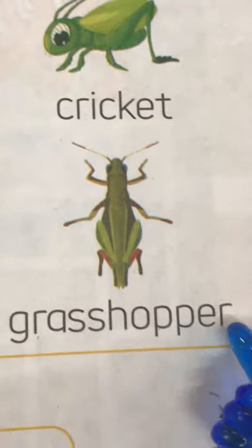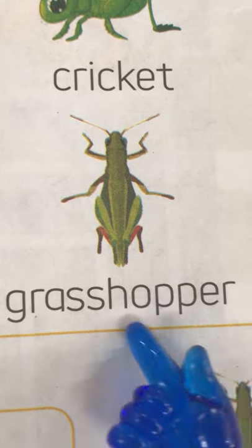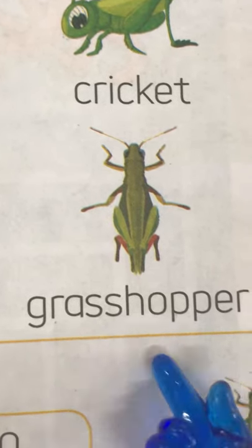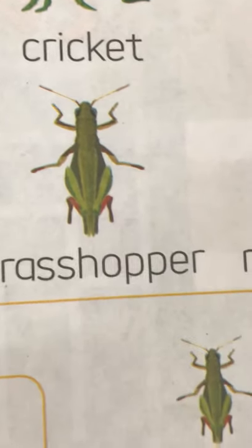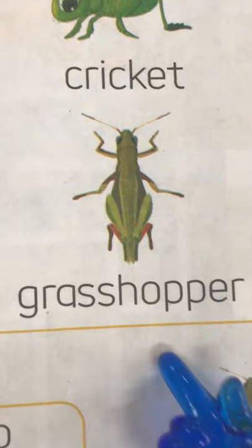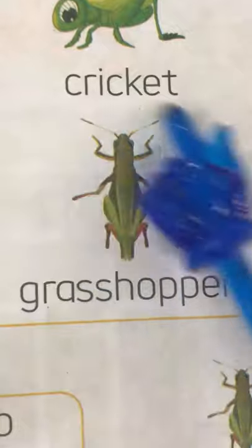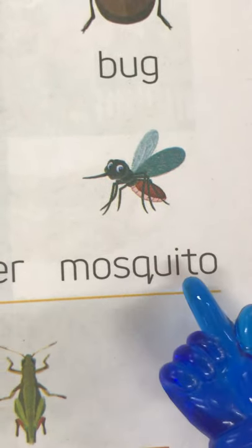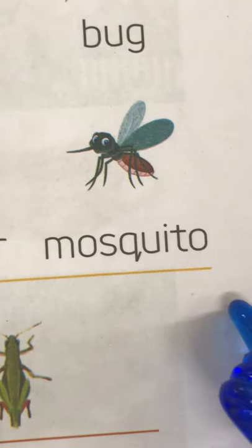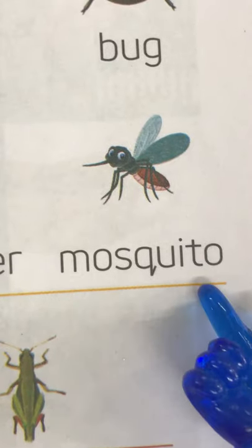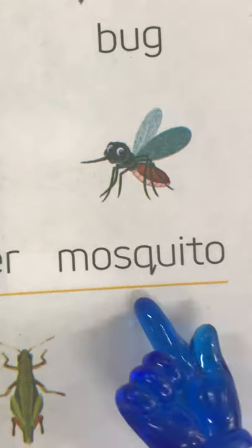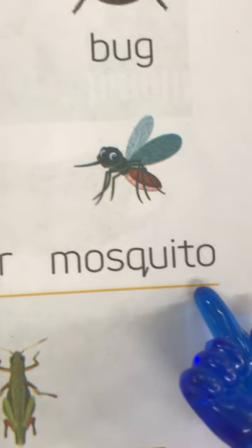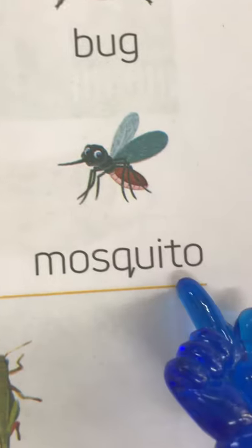Now, move on to next — grasshopper. G-R-A-S-S-H-O-P-P-E-R. As the name says 'hopper,' the grasshopper jumps very well. Next is mosquito — M-O-S-Q-U-I-T-O. Do you know mosquito likes blood? Be very careful of mosquito bites because mosquito likes blood.